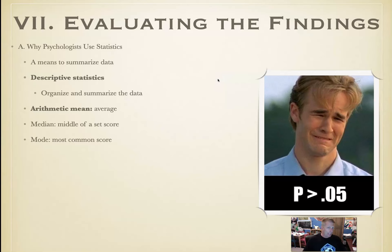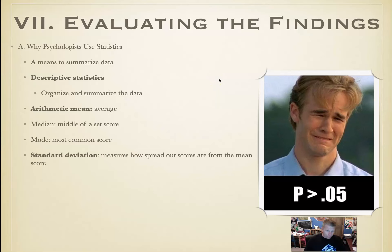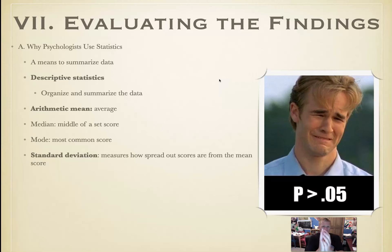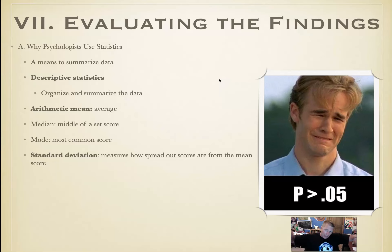In a standardized normal curve, the mean, mode, and median should all be the same thing. Standard deviation measures how spread out scores are from the mean — how far they vary. If scores are all clustered together, that's a low standard deviation. If you have outliers very low and very high, the standard deviation becomes greater.